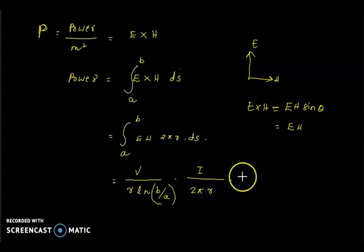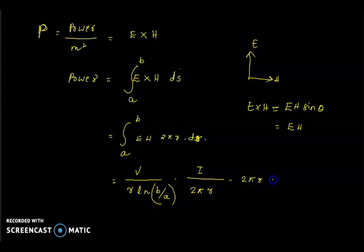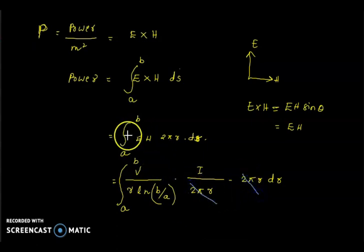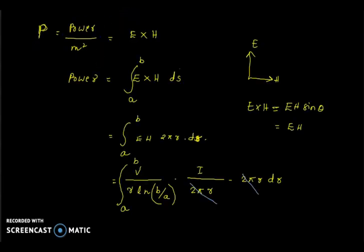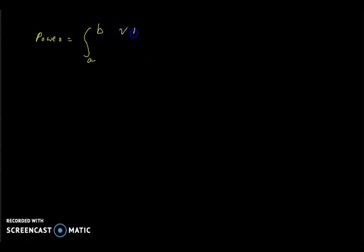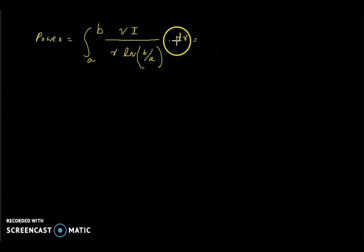This expression is then integrated from a to b. We can cancel the 2πr terms, and the power expression becomes the integral from a to b of V·I / (r · ln(b/a)) · dr. Since voltage V, current I, and ln(b/a) are all constants, we can take them outside the integral, leaving the integral of 1/r·dr from a to b, which gives ln(b/a).